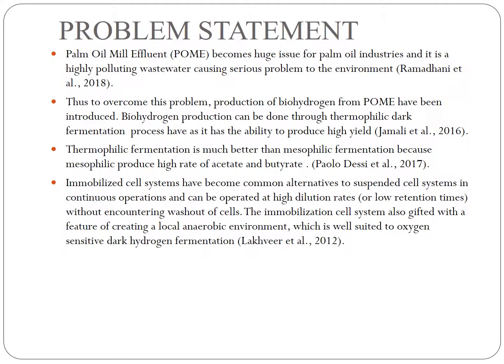For the Problem Statement, POME has become a huge issue for the palm oil industry as it is a highly polluting wastewater causing serious problems to the environment. To overcome this problem, production of biohydrogen from POME has been introduced. Biohydrogen production can be done through thermophilic fermentation, which has the ability to produce high yield. Thermophilic fermentation is much better than mesophilic fermentation because mesophilic produces high rates of acid. Immobilized cell systems have become a common alternative to suspended cell systems in continuous operation and can be operated at high dilution rates without encountering washout of cells. The immobilized cell system also creates a local anaerobic environment well suited to oxygen-sensitive dark hydrogen fermentation. For this experiment, immobilized cell systems have been used.